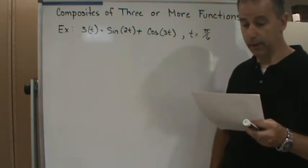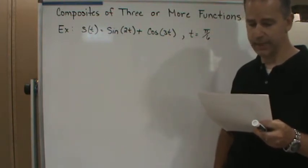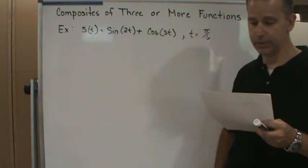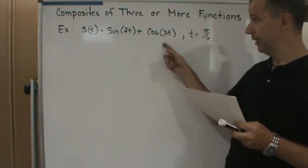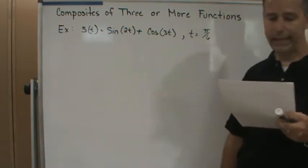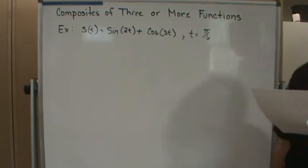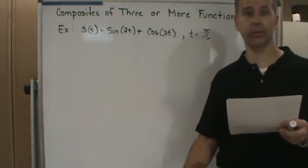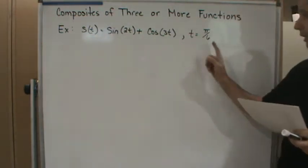What is the velocity of the particle at time t = π/6? We're looking for the velocity, so that means we're going to want the velocity function, which is the derivative of the position function.